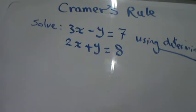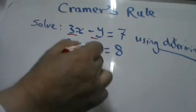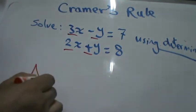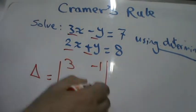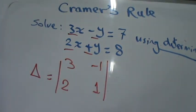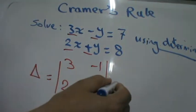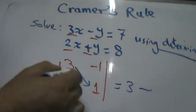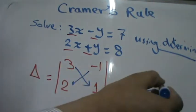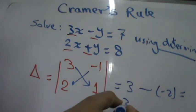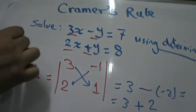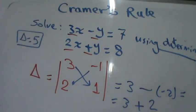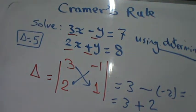First, you will find the coefficient determinant, which is called delta. Delta equals the determinant with entries 3, negative 1, 2, 1 — the coefficients of the variables. Its value is 3 times 1 equals 3, minus negative 1 times 2 equals negative 2, which gives 3 plus 2 equals 5. So delta equals 5.